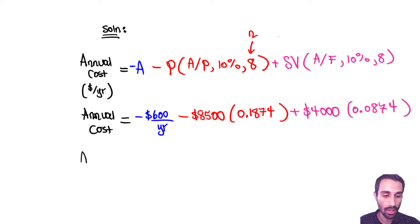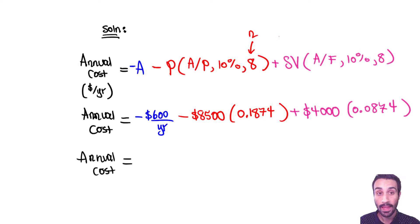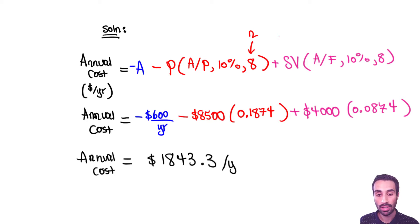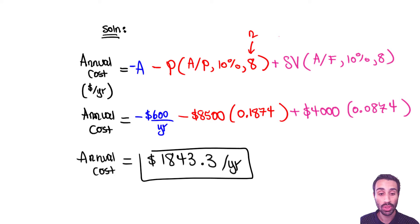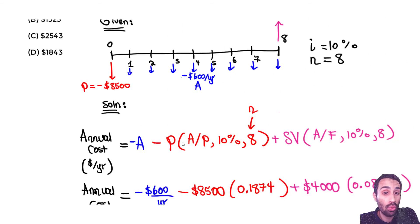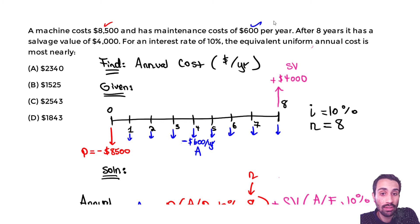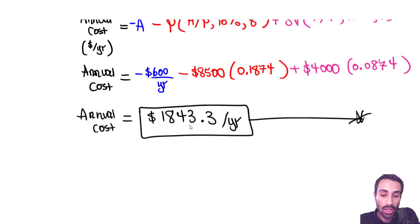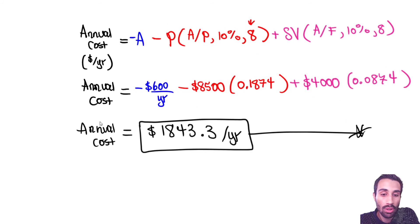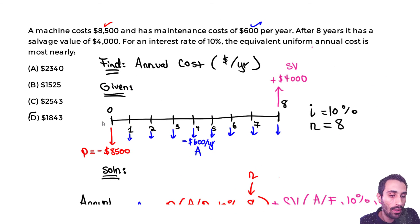Now do the math. Don't forget to keep the negatives and keep the salvage value positive. When I solved for the annual cost, I got approximately negative $1,843.3 per year. This is how much we need to put down every year to be equivalent to the given cash flow. The most appropriate answer should be D.